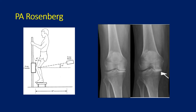The final view is the PA Rosenberg view. This is an often neglected view because people don't quite understand it. The image on the left shows a patient with their knee bent 45 degrees and the x-ray beam angled down 10 degrees, and this shows the condyles of the knee joint. On the x-ray on the right you can see a standard AP view showing some medial compartment narrowing, and then the Rosenberg view with a right arrow showing the posterior femoral condyle contacting the tibia. The Rosenberg view is very good at looking at the back of the condyles and putting those in contact with the tibia.